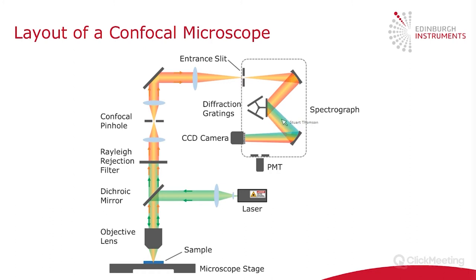The light that's been separated into its constituent wavelengths passes onto a CCD camera, which allows you to acquire the full spectrum in a single shot. For both photoluminescence and Raman steady state measurements, you would use the CCD camera. The RMS1000 can also function as a photoluminescence lifetime microscope, with a single point detector — a photomultiplier tube — to measure photoluminescence lifetimes. The light can be directed through a slit and onto the PMT for lifetime measurements.